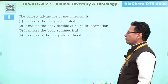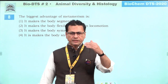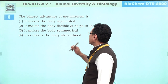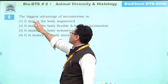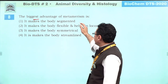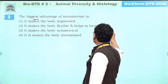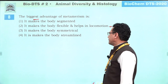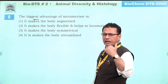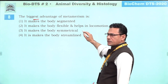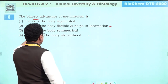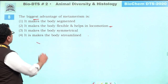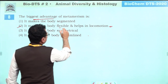The biggest advantage of metamerism: metamerism means segmentation of the body. True metamerism is seen when segmentation occurs in mesodermally derived structures. The options include: it makes the body segmented — true but not the biggest advantage. It makes the body flexible and helps in locomotion — this is the biggest advantage. The vertebral column is segmented, made up of vertebrae, which is a true example of metamerism. It gives the body flexibility and helps in locomotion. Making the body symmetrical or streamlined is not the advantage of metamerism.